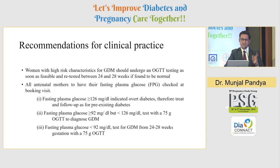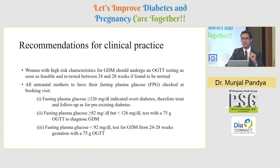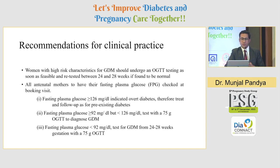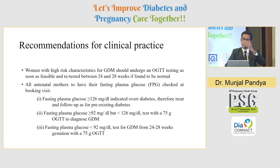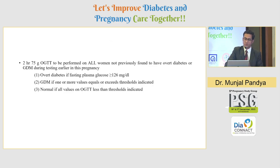Key recommendations: females with high-risk characteristics for GDM should undergo OGTT as soon as feasible. If already diagnosed with diabetes, do not repeat OGTT at 24 to 28 weeks. For fasting glucose ≥126 mg/dL, stamp as pre-existing diabetes. If fasting glucose is between 92 to 126, perform 75-gram OGTT. If fasting glucose is less than 92, repeat the test at 24 to 28 weeks with 75-gram OGTT for females not previously diagnosed with diabetes mellitus.